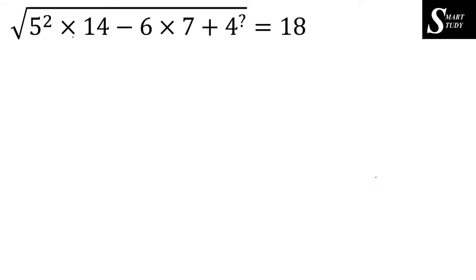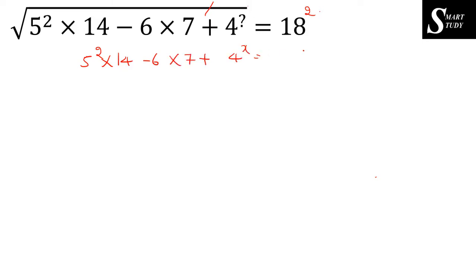The third question: under root of 5 squared into 14 minus 6 into 7, plus 4 to the power question mark, is equal to 18. Since the value is within a root and we need to find the power, I will take squares on both sides. This eliminates the root, and 18 squared gives 324. So the equation becomes 5 squared into 14 minus 6 into 7 plus 4 to the power x equals 324.